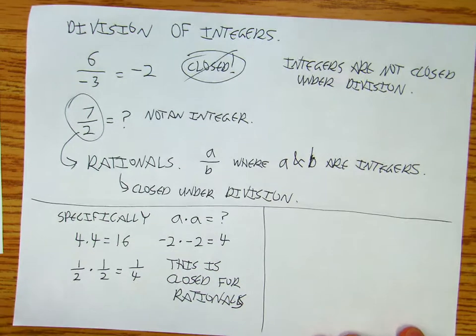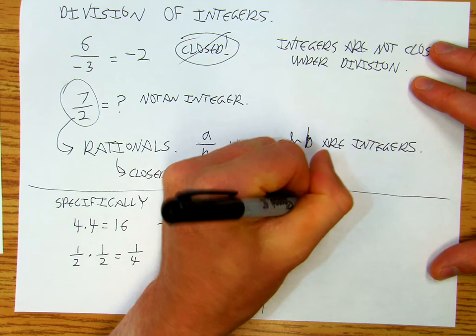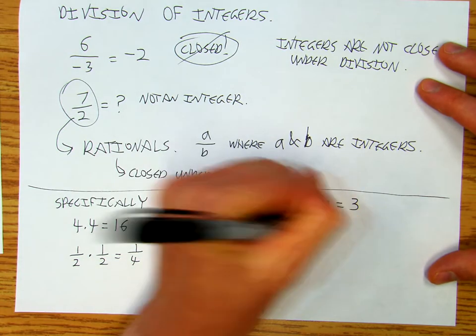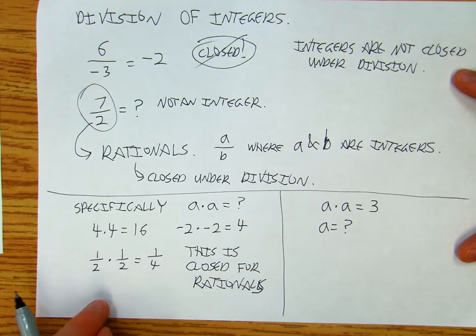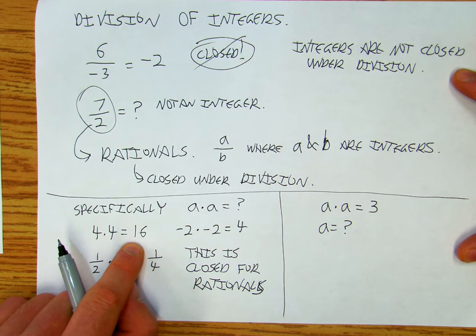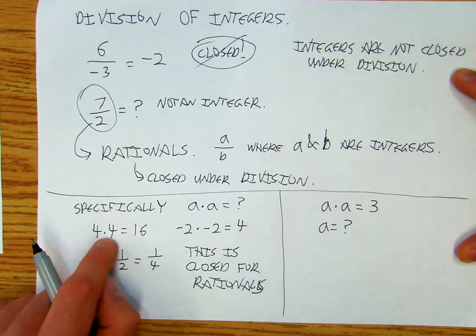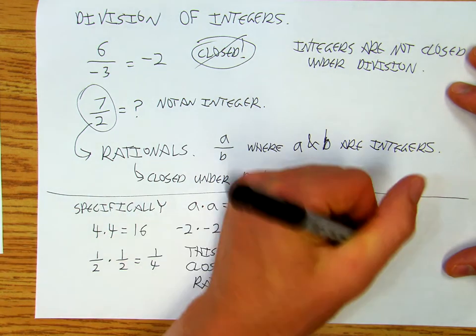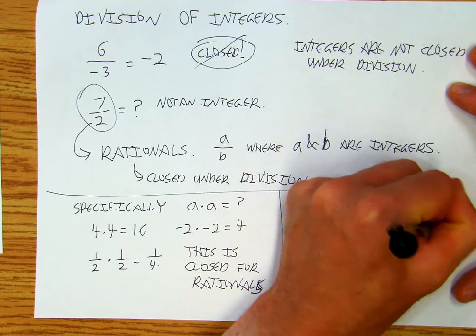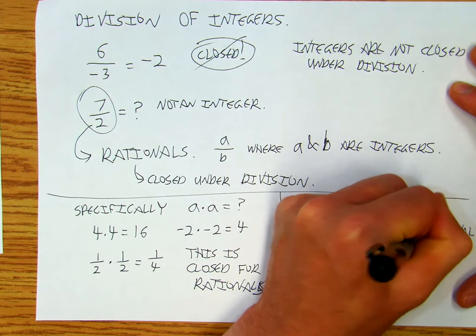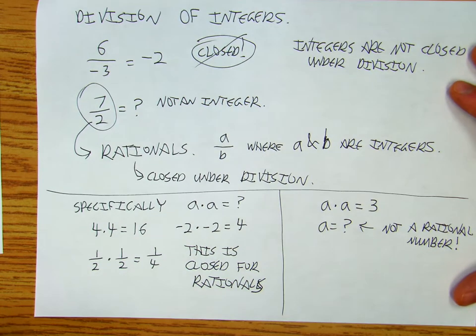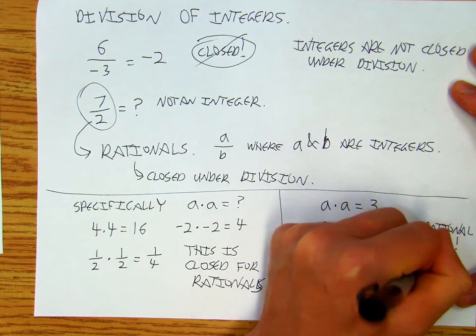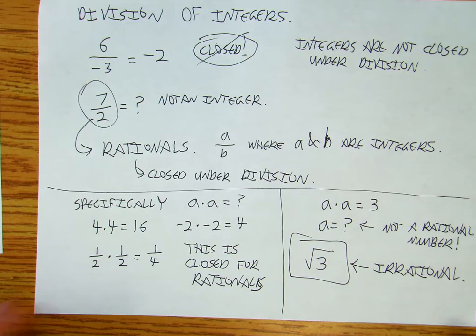But now suppose I have this thing where I say I want to do a times a equals 3. So what's a equal? It's pretty simple, it's just a continuation of this. 4 times 4 is 16, negative 2 times negative 2 is 4. So I just want two numbers that when I multiply them together, I get 3. And this is not a rational number. That is square root of 3, that's irrational. And so that's why we need irrationals.